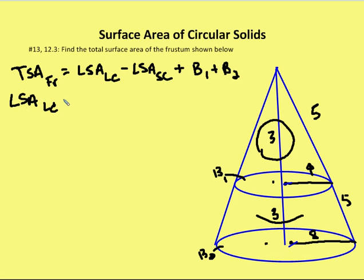Lateral surface area of the larger cone, πrl, which would be π times the radius of 8, times the slant height of 10, gives me 80π.